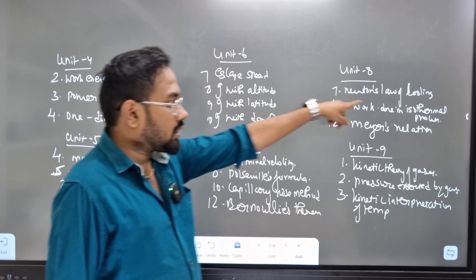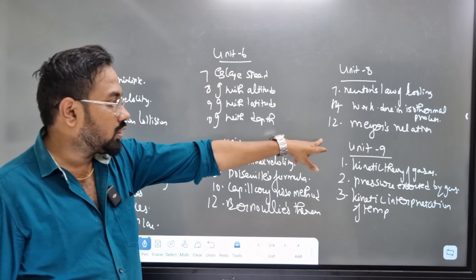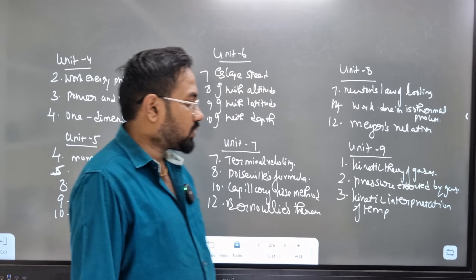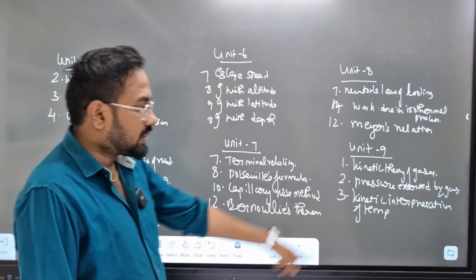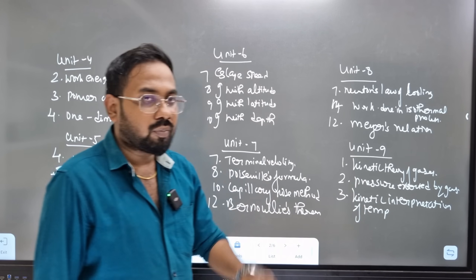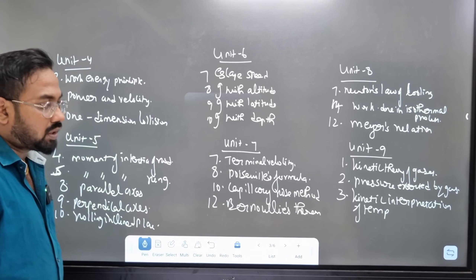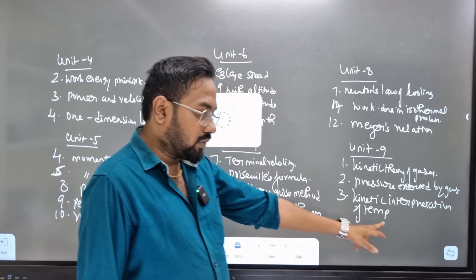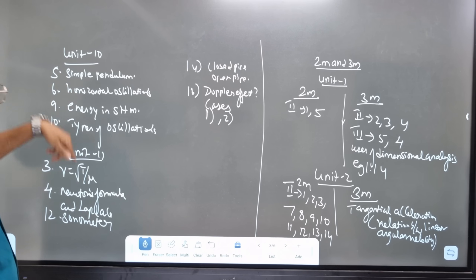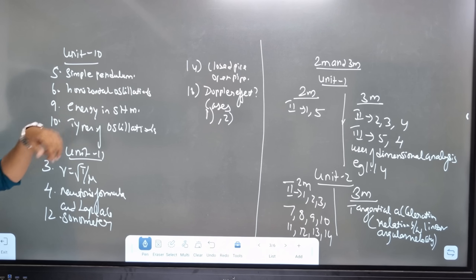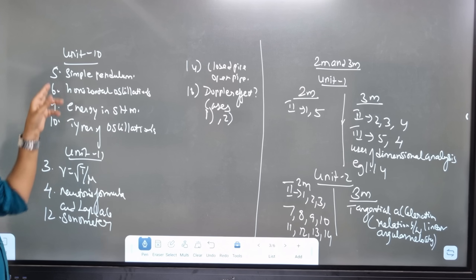Unit 8 covers Newton's law of cooling. The first topic is the isothermal process, and the major relation from the 12th book back. Unit 9 is the kinetic theory of gases — pressure and ideal gas. The kinetic interpretation of temperature is a very important 5-mark or 3-mark topic. Unit 10 covers simple pendulum oscillation, horizontal oscillation, energy in SHM, and types of oscillation.